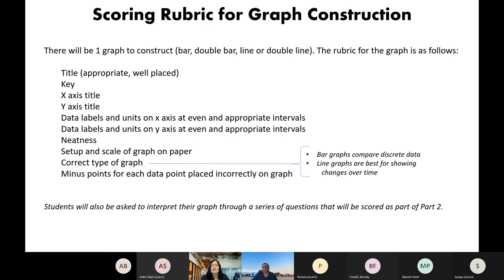Here's the scoring rubric for the graph. So it needs to have a title. The title should be an appropriate title that describes what information is going to be compared. It should be well placed. That kind of means at the top, in the center. There should be a key if it ends up being a double line or a double bar, so the reader can distinguish between the two sets. It needs to be an x-axis title, a y-axis title. Data labels and units. If it's a measure that has units on the x-axis, they need to be even and appropriately spread out into appropriate intervals and then the same for the y-axis.